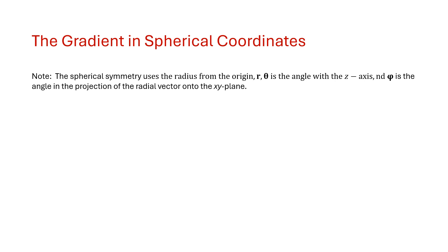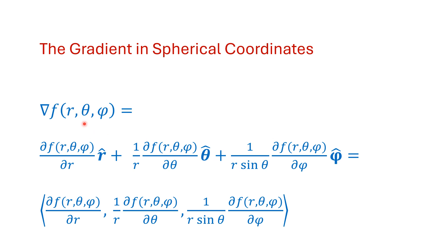The convention for r, θ, and φ in spherical coordinates is shown here. It gets a little more complicated because we have two angles. θ is the angle around (azimuthal) and φ is the angle with the z-direction (polar). In spherical coordinates the gradient is: the partial with respect to r, then (1/r) times the partial with respect to θ, and (1/(r·sin θ)) times the partial with respect to φ.